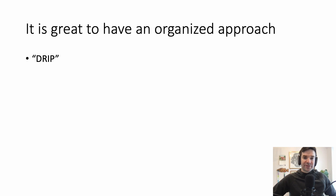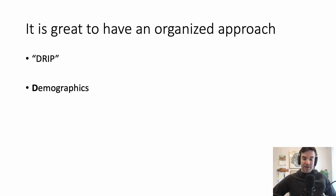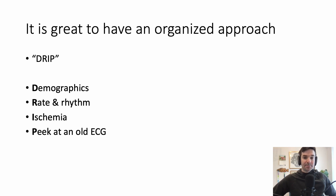It's really important to have an organized approach when reading an ECG. Here's one that I hope is helpful — it's called DRIP. First up: Demographics. Next, Rate and Rhythm. Then looking for signs of ischemia. And then take a peek at an old ECG.